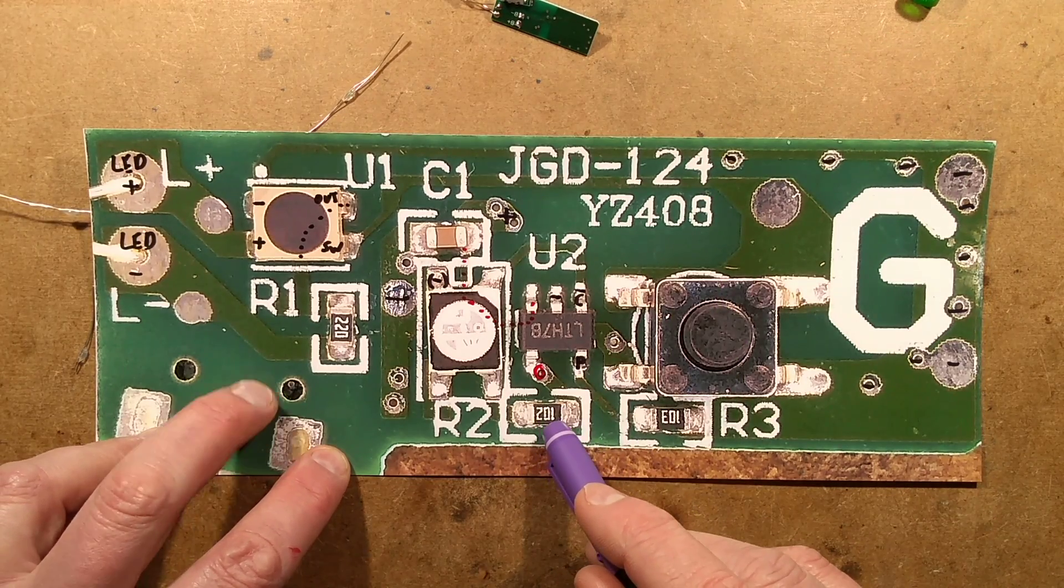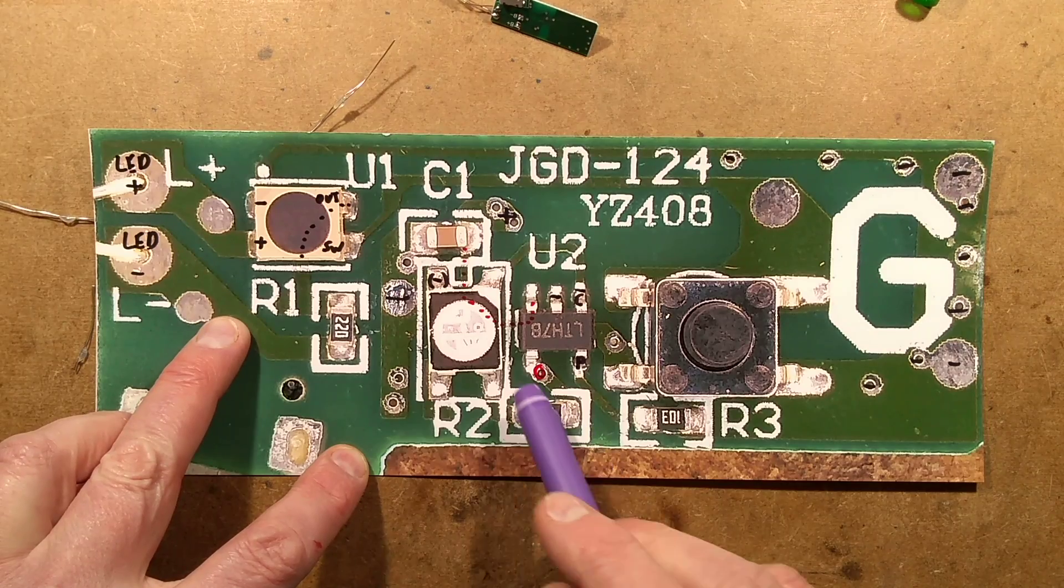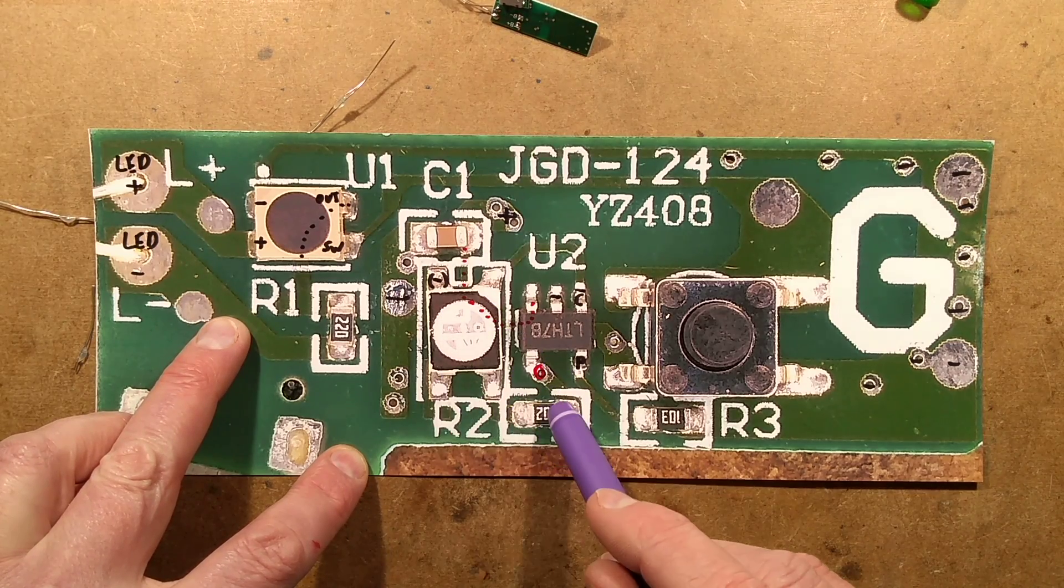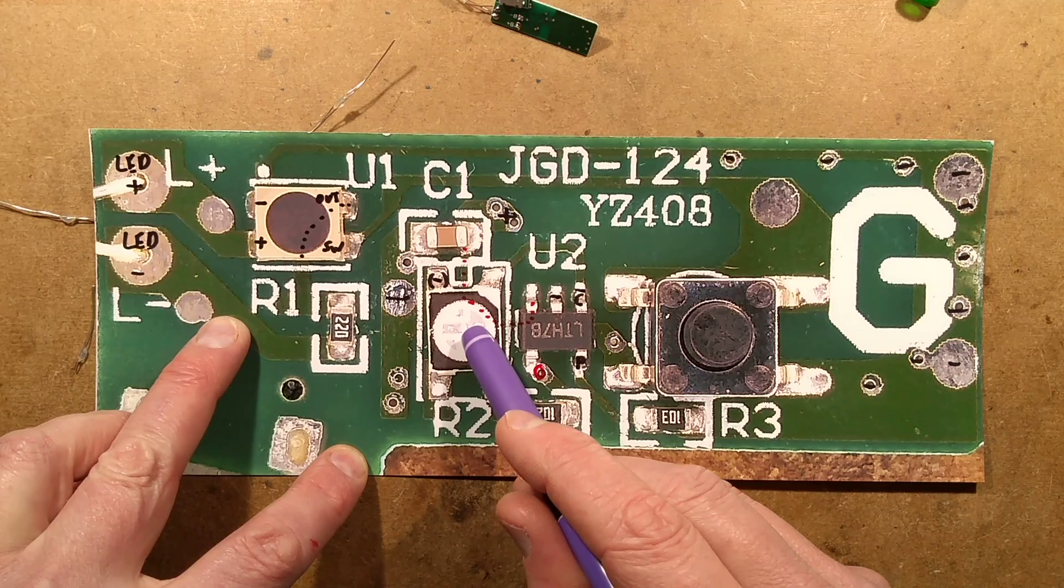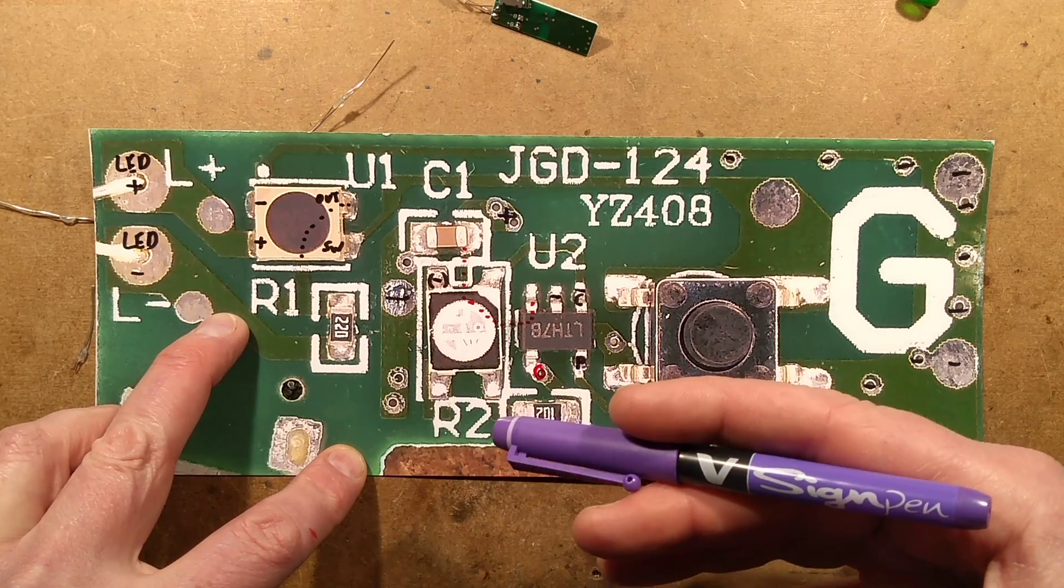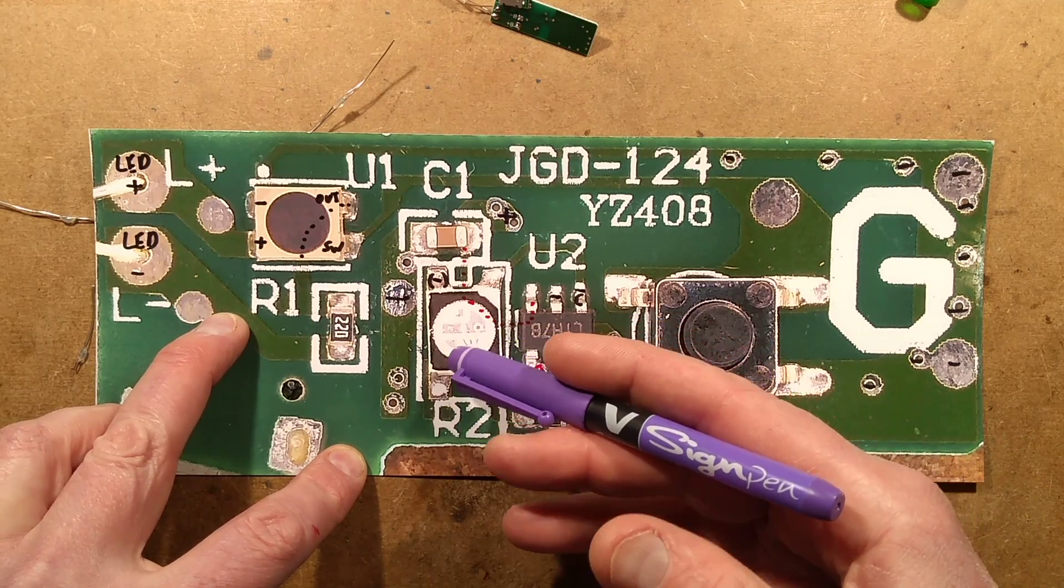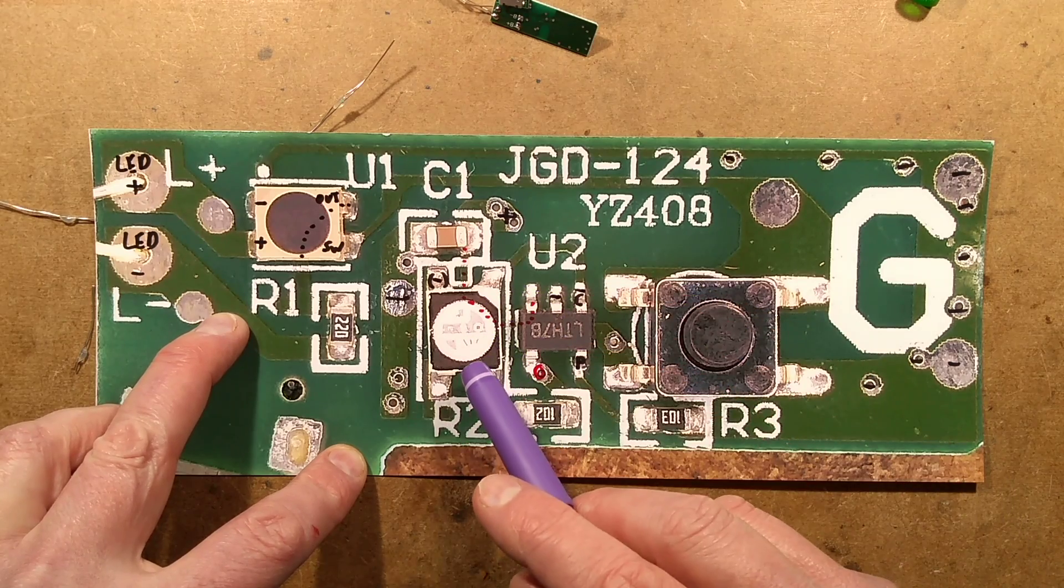We've got a 1K resistor, 102, which is limiting the current to both the LEDs in this. And there's only one resistor to do that for a very specific reason. It's to allow it to switch between the charging and charged indicator LEDs with just one pin.